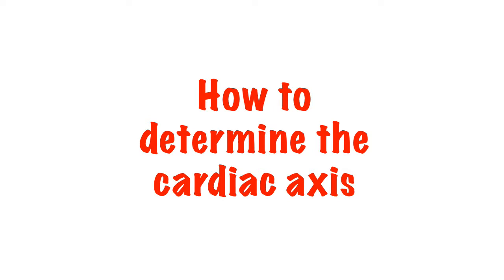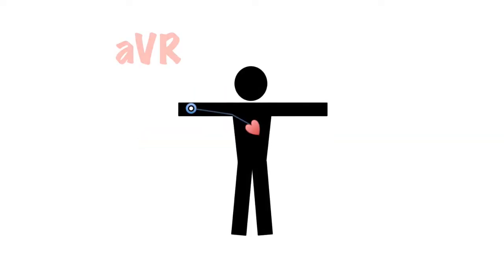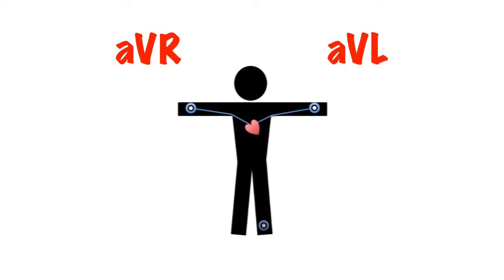How do we determine the axis? The three limb leads will give us a view from the right — AVR, the left — AVL, and the foot — AVF. But there are three further limb leads on a 12-lead ECG. Where do they come from?